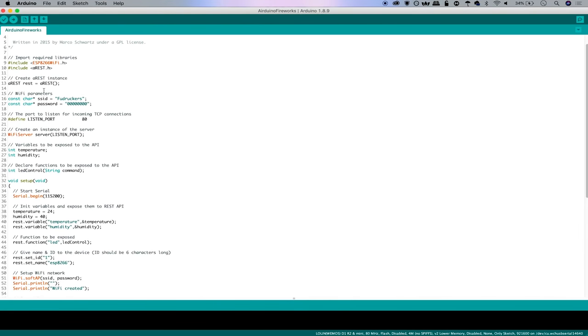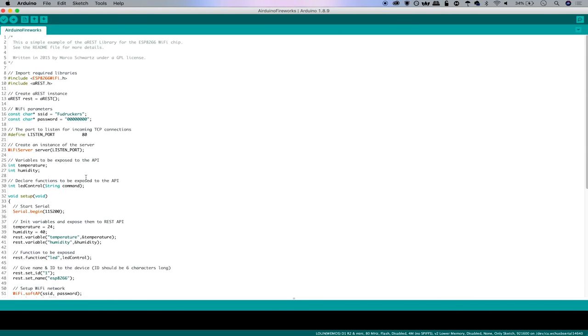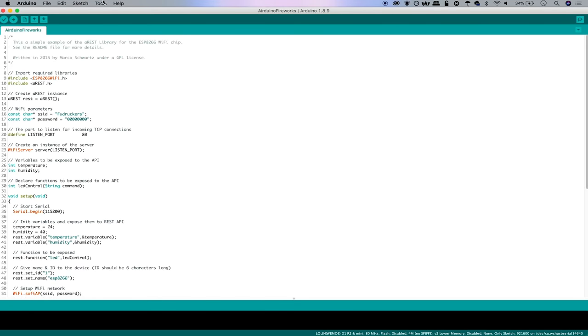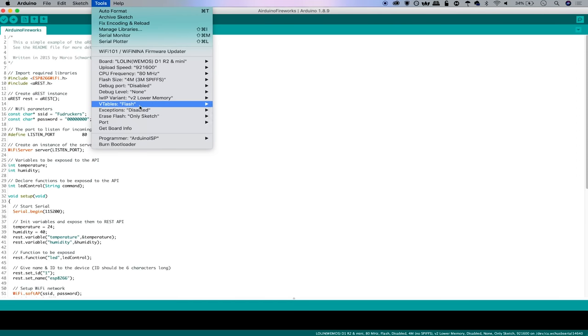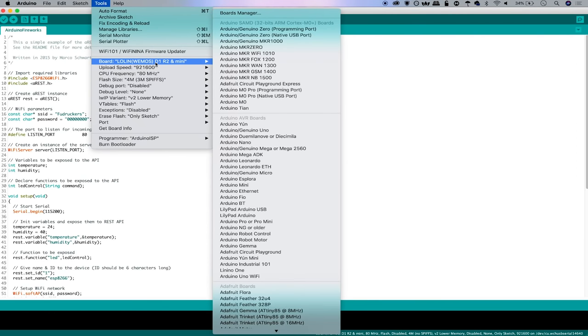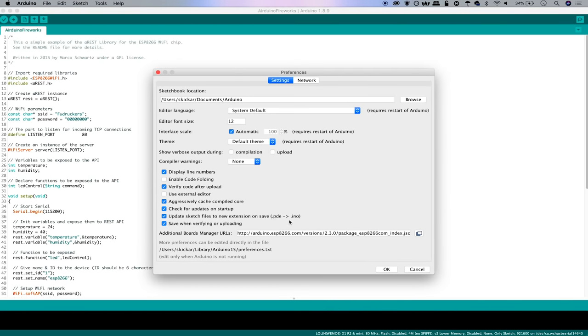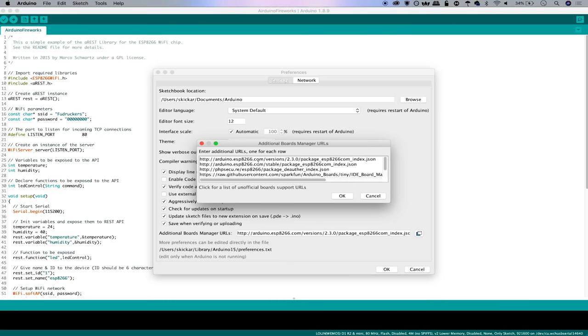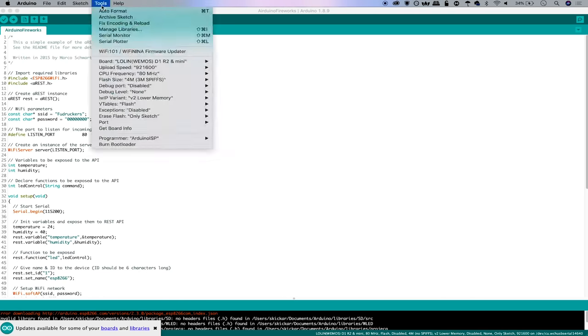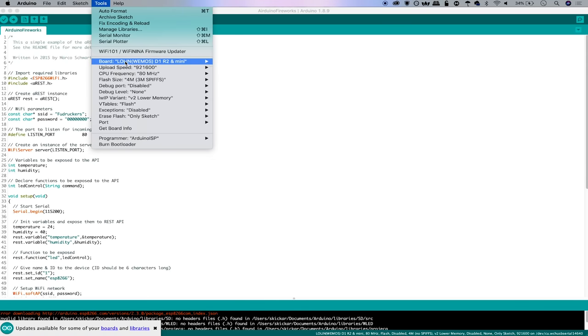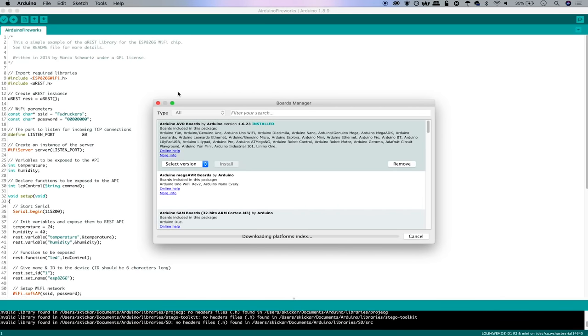Once this relay firework sketch opens, we'll see we have the ability to set the WiFi network that it creates in order for us to control the fireworks. We can set a password and that's pretty much all we need to modify. You can keep it at Fuddruckers if you want. Click on Tools, then Board, and select whatever board you're using. I'm using the Lolin Wemos D1 mini. If you don't see this, click on Arduino Preferences and in there you should see Additional Board Manager URL. Make sure you have this JSON link. Once you paste this JSON link, you can click okay. Then under Tools, you should be able to select the ESP8266 by searching for it in the board manager and loading the library.